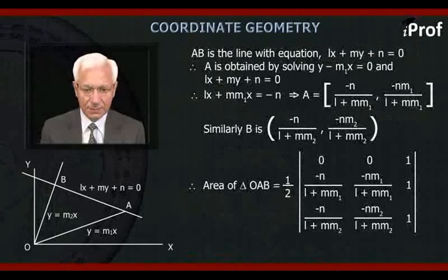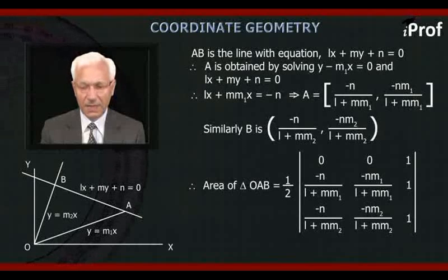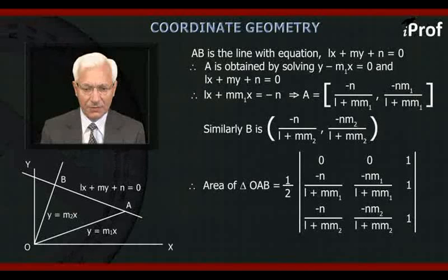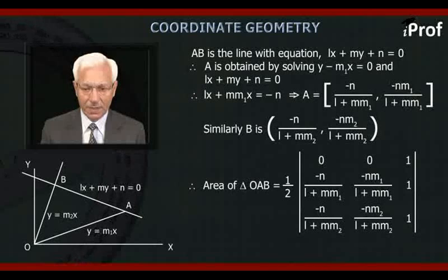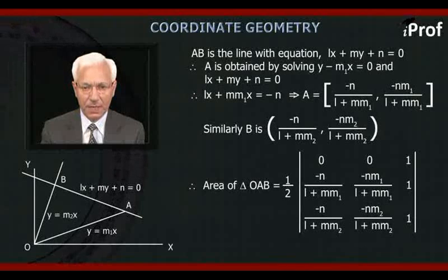AB is the line with equation LX + MY + N = 0. Point A is obtained by solving Y - M1·X = 0 and LX + MY + N = 0, giving LX + M·M1·X = -N. Therefore the coordinates of A are (-N/(L + M·M1), -N·M1/(L + M·M1)). Similarly, the coordinates of B are (-N/(L + M·M2), -N·M2/(L + M·M2)).